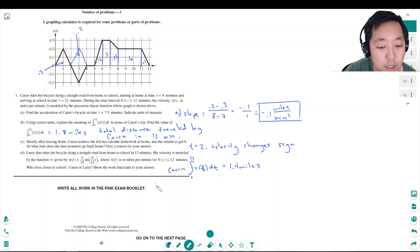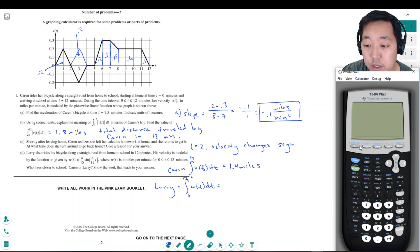And then Larry, 0 to 12 w of t dt. And I'm going to use my Wabbit calculator for this.